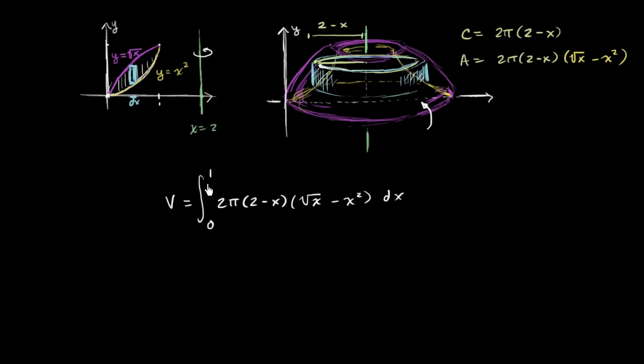In the last video, we were able to set up this definite integral using the shell or the hollow cylinder method in order to figure out the volume of this solid of revolution.